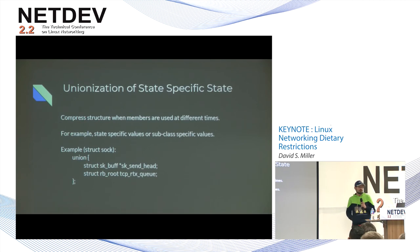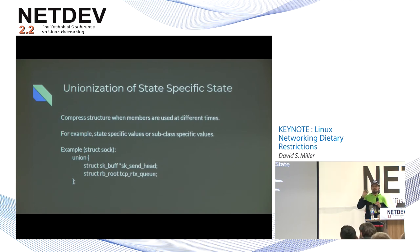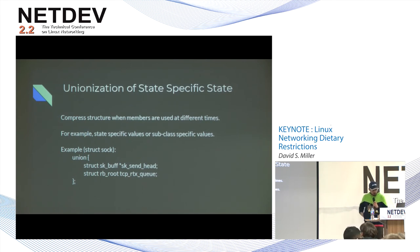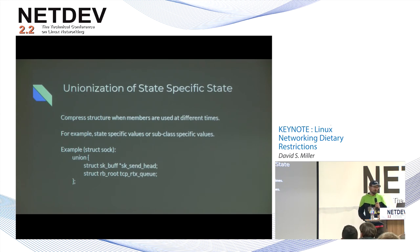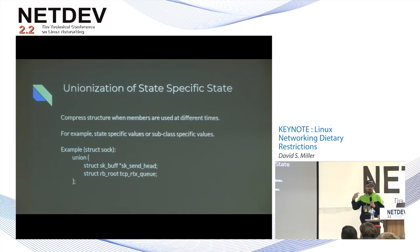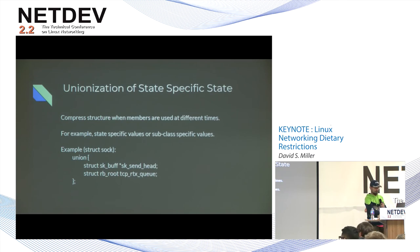Earlier I spoke about unionization of state-specific members. We have a structure member only used in two formally disjoint points in time, meaning we can use the same memory space for two different objects and define a union. In struct sock right now, we have sk_sendhead, used for various protocols to maintain their send queue. But for TCP we now use an rbtree and don't use sk_sendhead. So for TCP sockets we can use the tcp_rtx_queue rb_root pointer. These two objects can share state because TCP will never use sk_sendhead, and protocols that use sk_sendhead will not use tcp_rtx_queue.